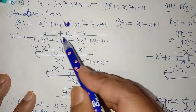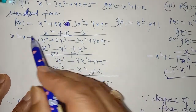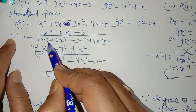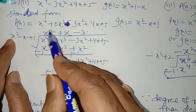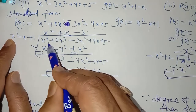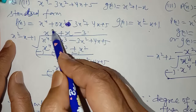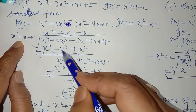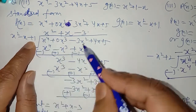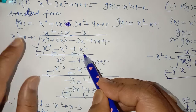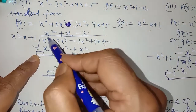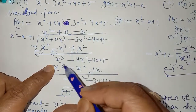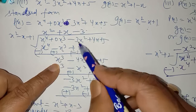Now start dividing. Divide the dividend by the divisor. The dividend has x to the power 4. The divisor has x². So to get x⁴, multiply x² by x². Multiply the divisor by x²: x⁴, then minus x³, then plus x² — write like terms below like terms. Then sign change for subtraction — these cancel out. You get 0 plus 1x³ — same sign adds up — giving x³ plus 4x² plus 4x plus 5.